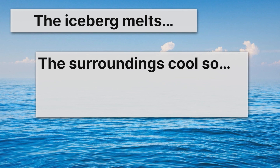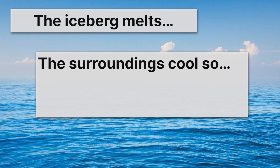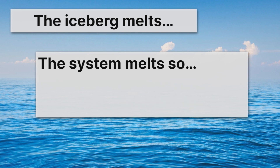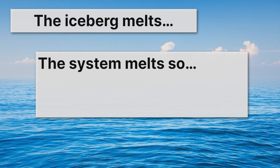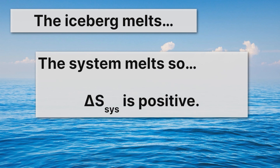So what does that mean about the entropy change for the surroundings? Well, it's actually negative. The entropy of the water around the iceberg decreased because it cooled. And remember, colder things are lower in entropy. On the other hand, the system — which we said was the iceberg — the system melts. So the phase goes from solid to liquid. And remember, that's an increase in entropy.